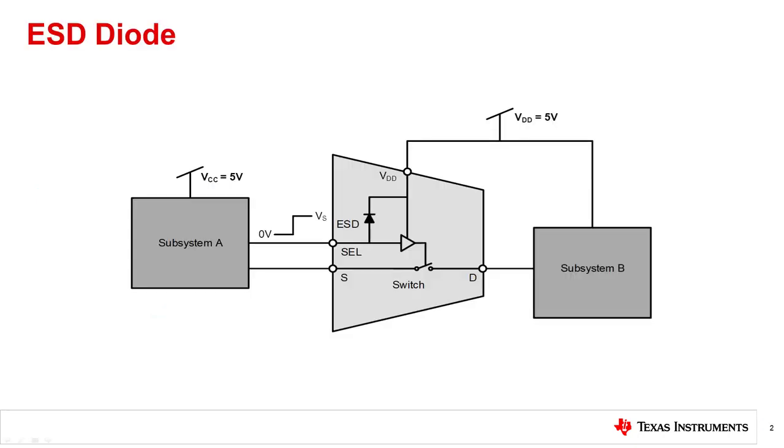Before we jump into fail-safe logic, I will explain how an ESD diode in a traditional switch works. In the setup shown here, both the subsystems and the switch are powered with 5 volts. The ESD diode prohibits any current flow from VDD into SELECT. The signal on the SELECT pin will only flow into VDD if it surpasses the maximum ratings mentioned in the datasheet. This is usually 0.5 volts above VDD. Due to this, the device is protected from ESD events up to the datasheet specification.